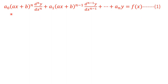Look at this differential equation. This is a linear differential equation but the coefficients are not constants. For example, the coefficient of the first term is a₀ times (ax + b)^n, the second term coefficient is a₁ times (ax + b)^(n−1), and so on. These coefficients contain x, meaning we don't have constant coefficients.